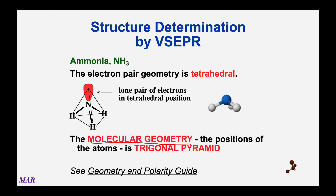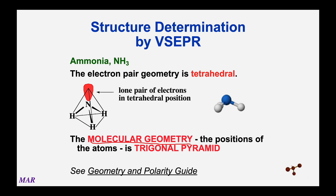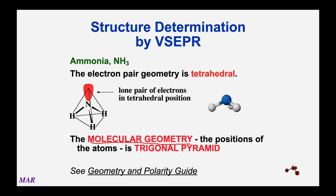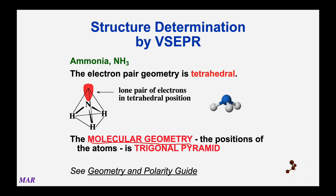We would say that ammonia has an electron pair geometry that's tetrahedral, and because it has one lone pair, the molecular geometry would be called the trigonal pyramid. These kinds of names are in the geometry and polarity guide, so hopefully you can start seeing the utility of using it sooner rather than later.